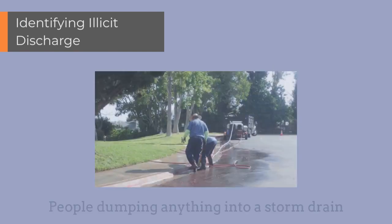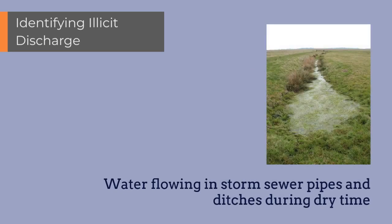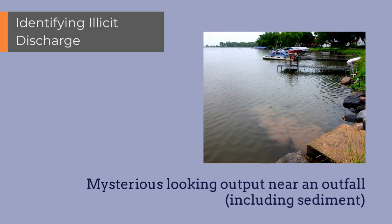Some examples of what you can look for to identify illicit discharge are people dumping liquids, animal waste, leaves, and grass clippings or anything unidentifiable into a storm drain. Water flowing in storm sewer pipes and ditches during dry times. Mysterious looking output in a storm pond, stream, or lake near an outfall, including sediment.